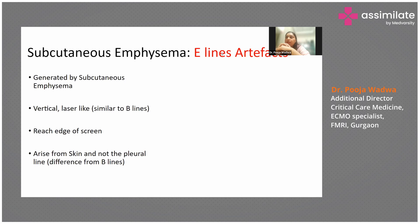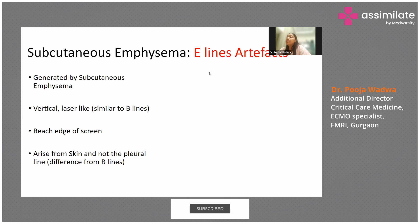E-lines are due to subcutaneous emphysema. They are vertical lines similar to B-lines, but they arise from the skin, not from the pleura. Both are vertical, but the one arising from the pleural line is a B-line, and the one arising from the skin line is an E-line.